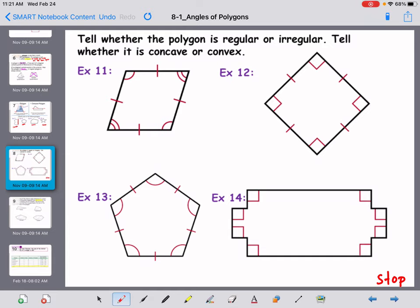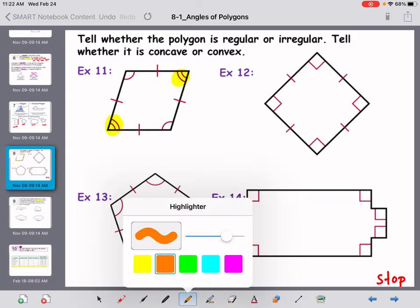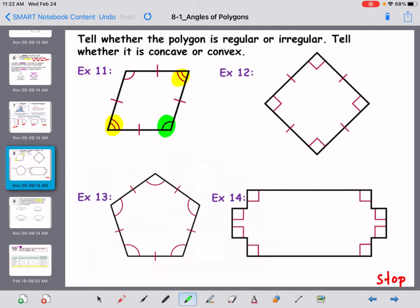So regular, they all have to have the same side measurement. Does example eleven have all of the sides the same measure? Yes, the sides are all the same measure. But what about the angles? Well, if I look at these angles they're the same. However, when I highlight these angles, notice they have a different mark. So this polygon is actually irregular and it is concave.